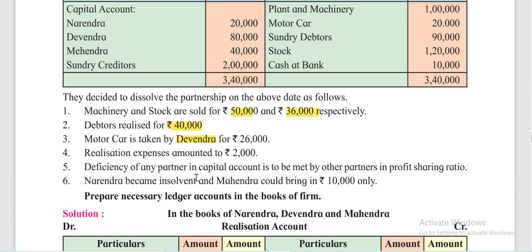If there is a deficiency of any partner, the other partners will pay in their profit sharing ratio. Narendra became insolvent and Mahendra could bring in Rs 10,000 only. After insolvency, Mahendra brought Rs 10,000 and Narendra didn't bring anything.